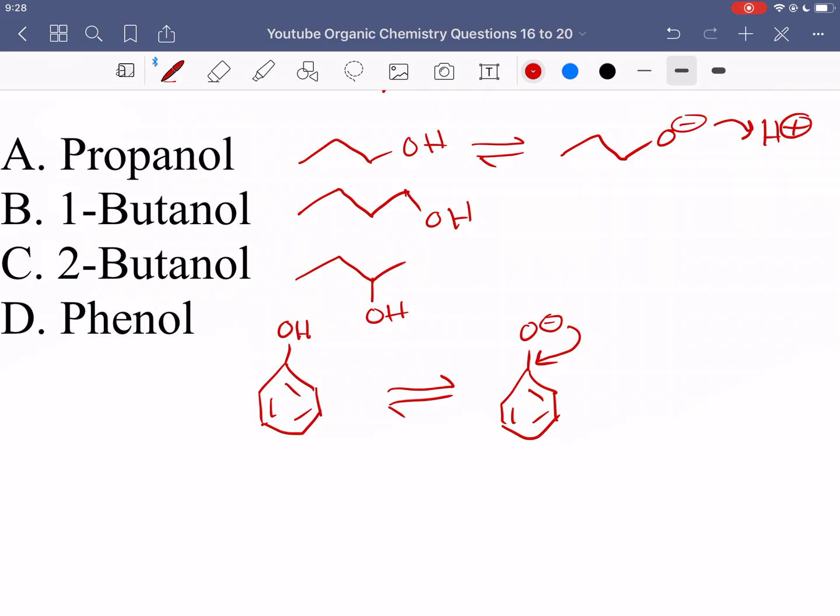which means now that the oxygen, which doesn't like to have a charge, it can not feel the effects of that negative charge because it's being distributed in the conjugated system. Whereas with all the other aliphatic alcohols, when they get a negative charge, oxygen has this charge, it doesn't want to have a charge, and it can't really distribute a charge in these carbon chains.